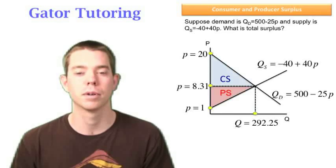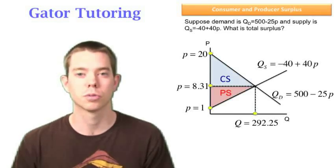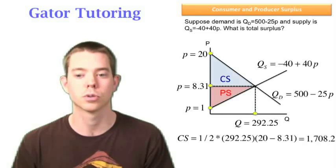So now I have all four of my points, and now I can solve for my producer surplus and my consumer surplus. Well, consumer surplus is one half base times height, where the base is 292.25 and the height is the difference between 20 and 8.31. And when I solve that, I see consumer surplus is 1,708.2.